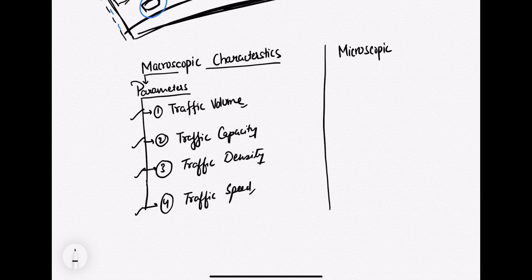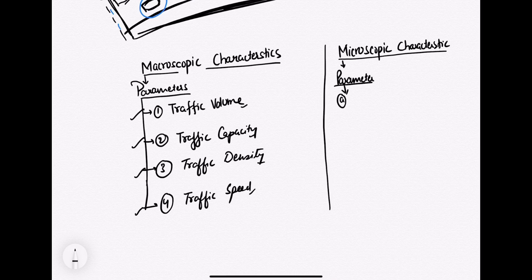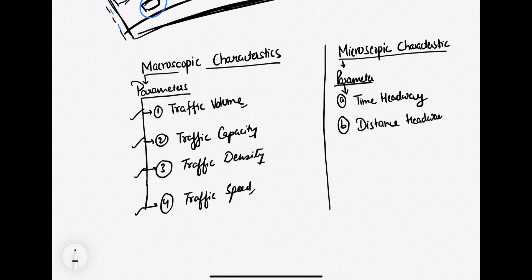While in your microscopic characteristics, the parameters are: time headway, distance headway, and speed.